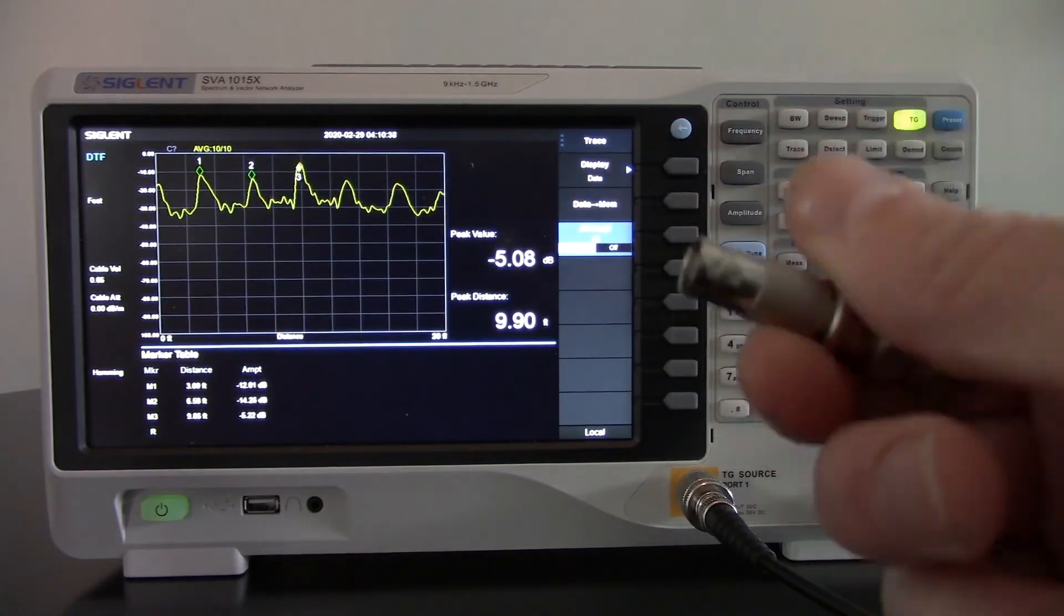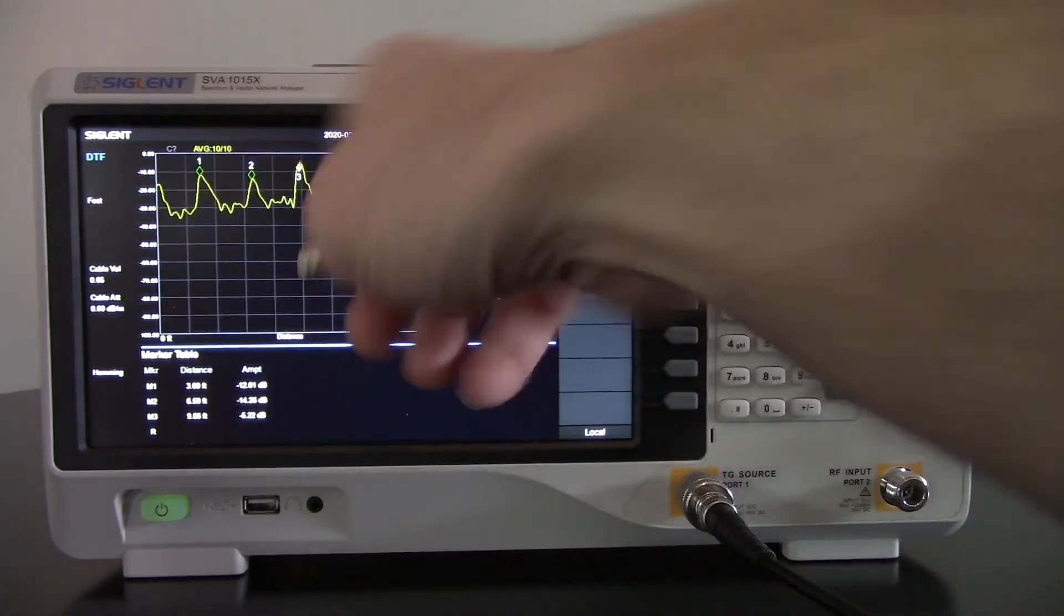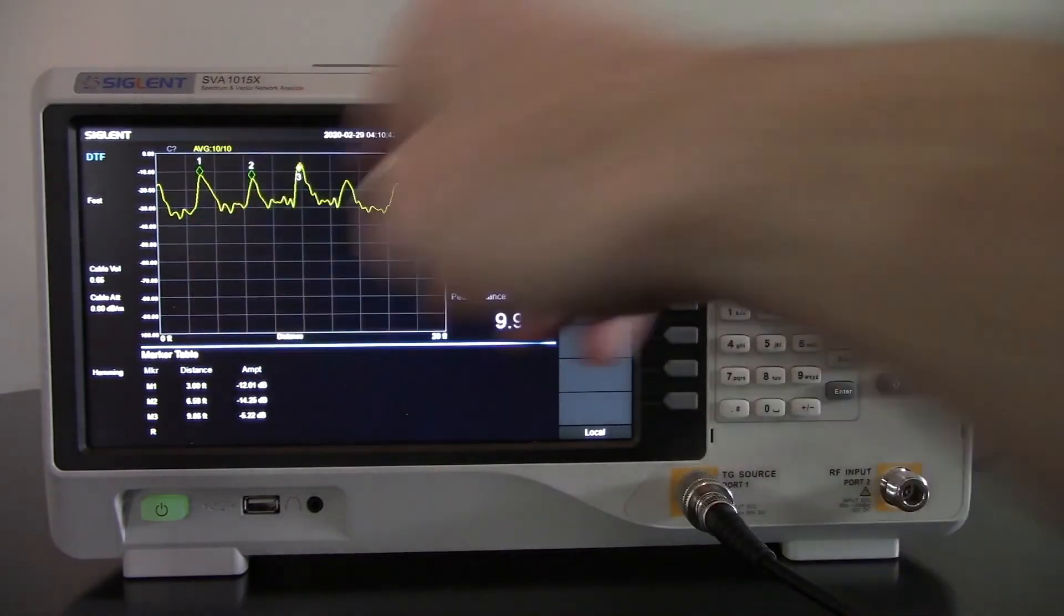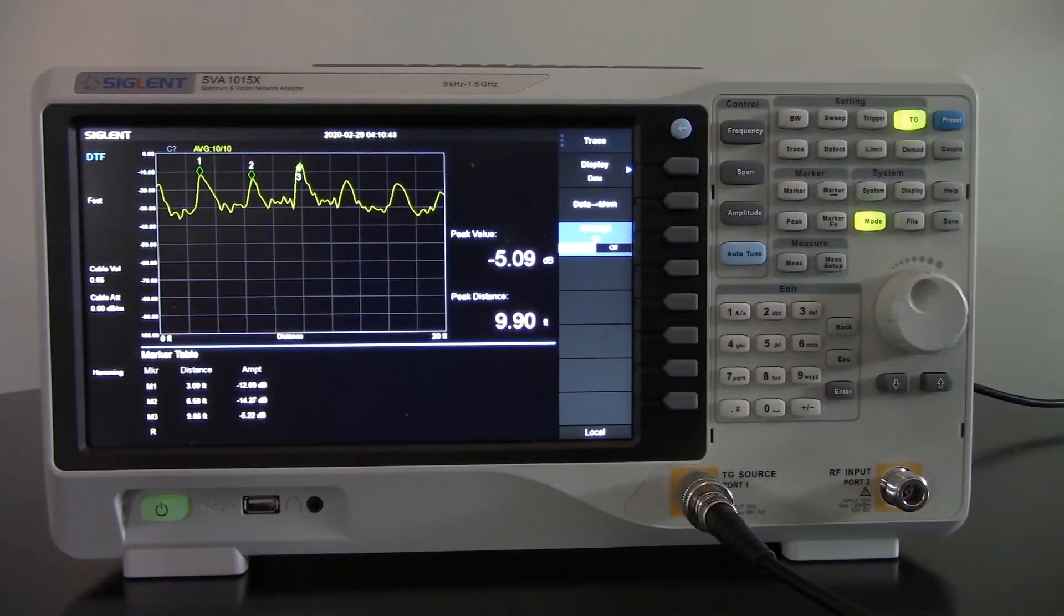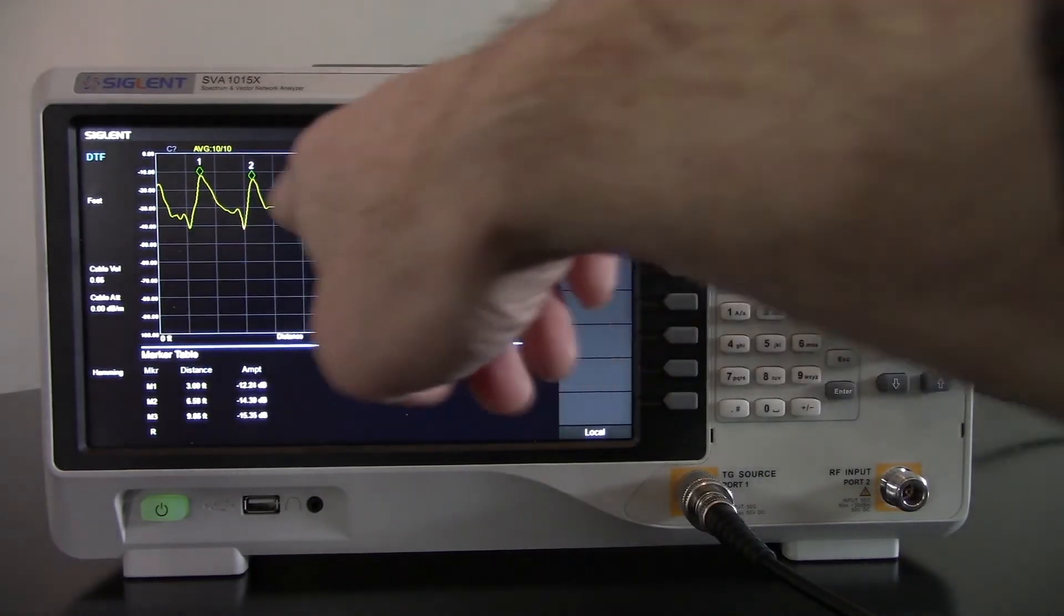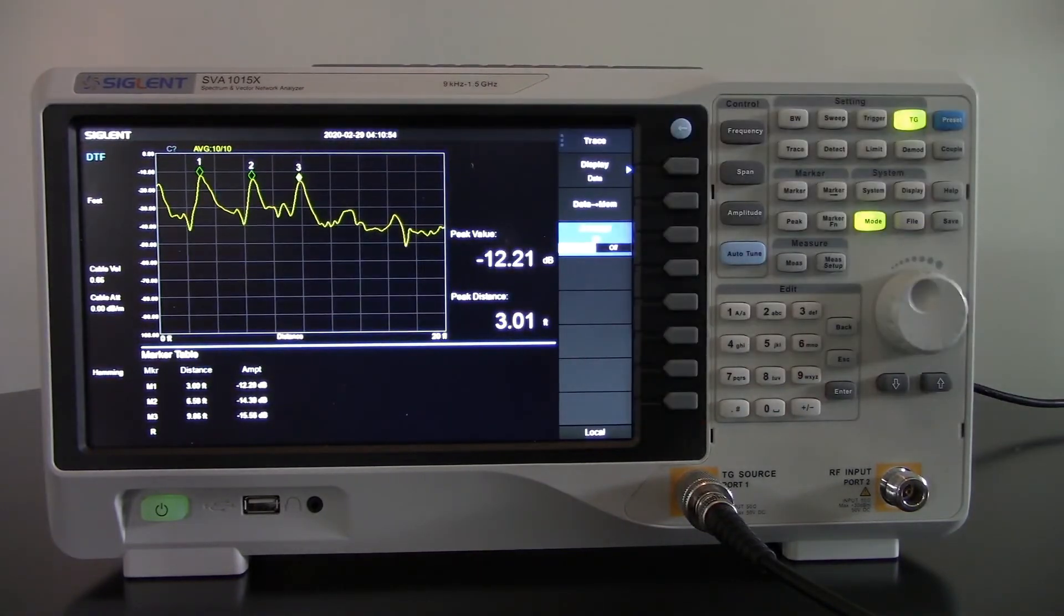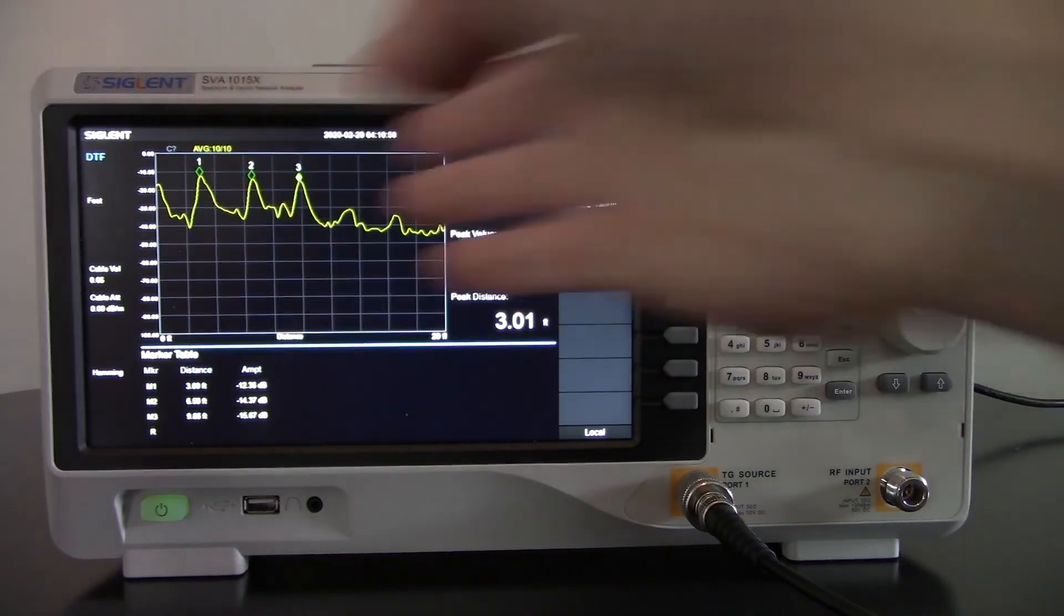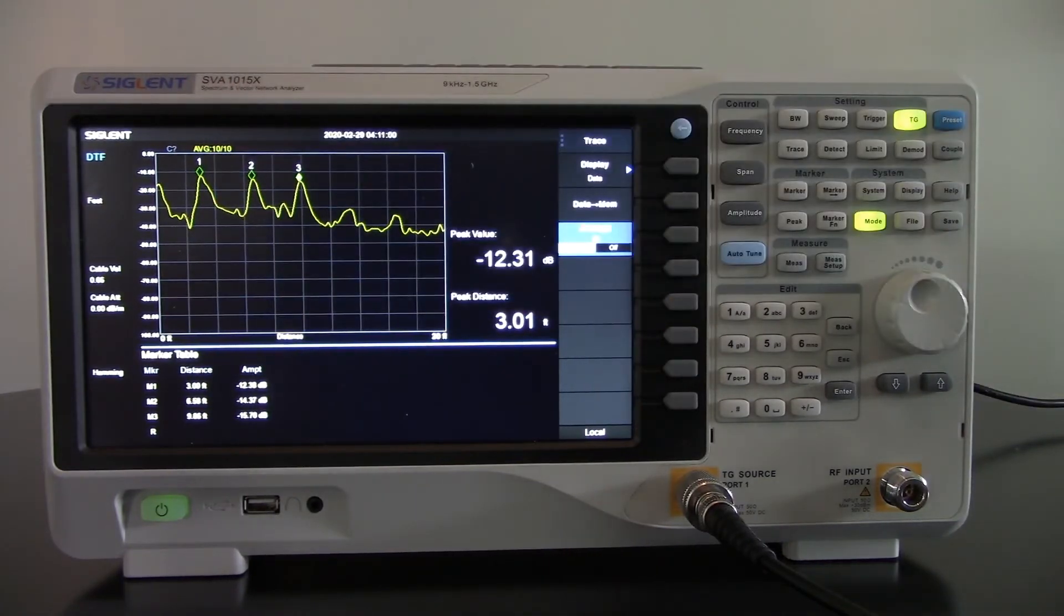So remember, these are 50 ohm barrel adapters, but they aren't perfect. And so we're still seeing, just because of that minimum impedance difference, we're actually seeing those changes. Now if I terminate in that 50 ohm termination again, you'll see we're going to decrease a lot of the excess peaks and noise. So we're actually getting rid of the excess peaks and the calculations on the other end. So really our cable does terminate there.